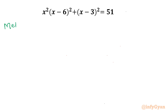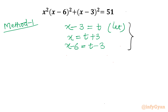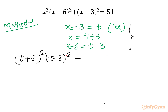Let me write here method number one, where I will consider x minus 3 equal to t. From this equation, I can write x is equal to t plus 3, and x minus 6 will be t minus 3. Now let us convert our equation in variable t using these substitutions. So I will write (t+3)², then (x-6)² becomes (t-3)², then t², and the right-hand side is 51.